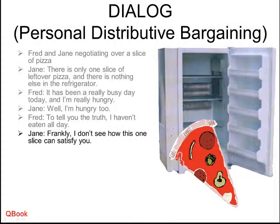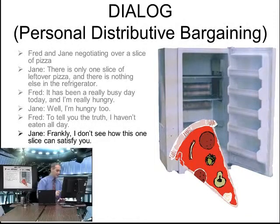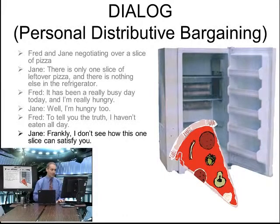Fred tries to say he's really hungry and hasn't eaten all day. Jane responds: frankly, I don't see how this one slice can satisfy you. Jane tries to tell Fred his goal is to not be hungry, but this piece of pizza is so small, he'll still be hungry anyway. So if he lets her eat it, she won't be hungry because she's smaller and doesn't need to eat as much.